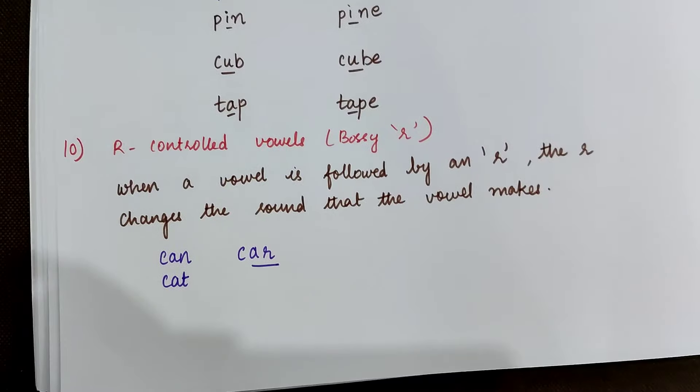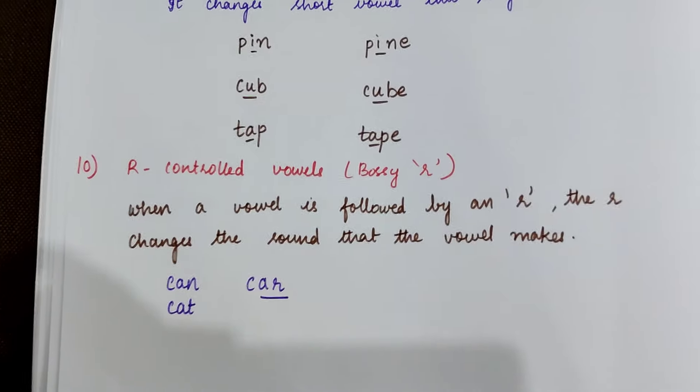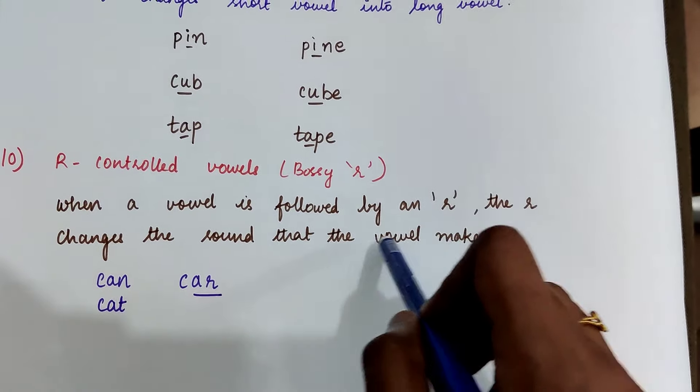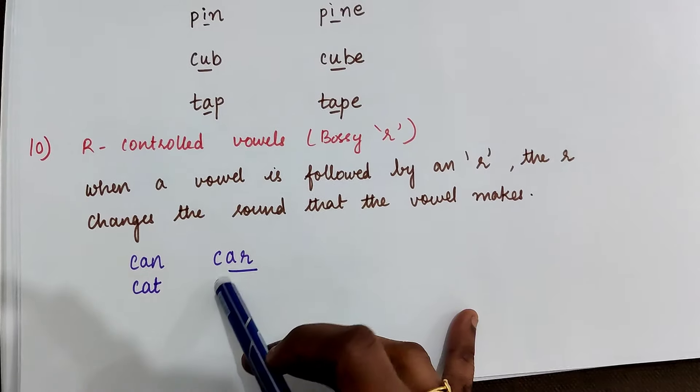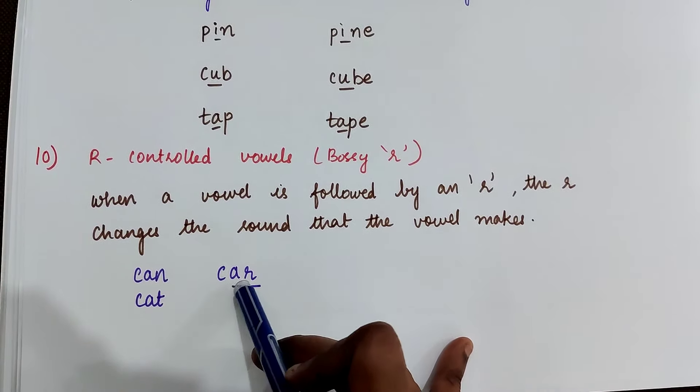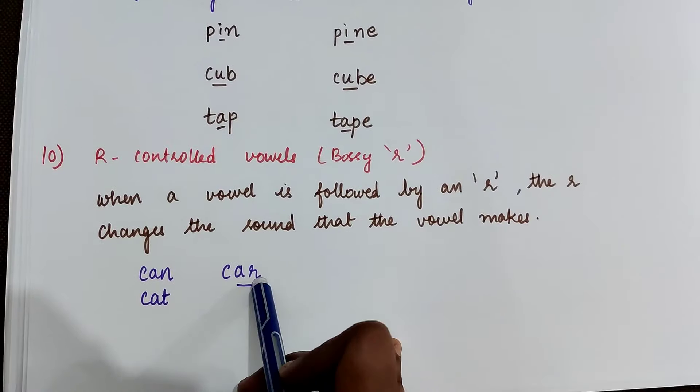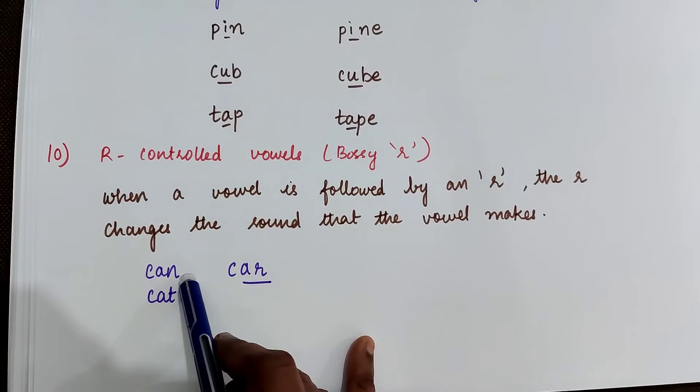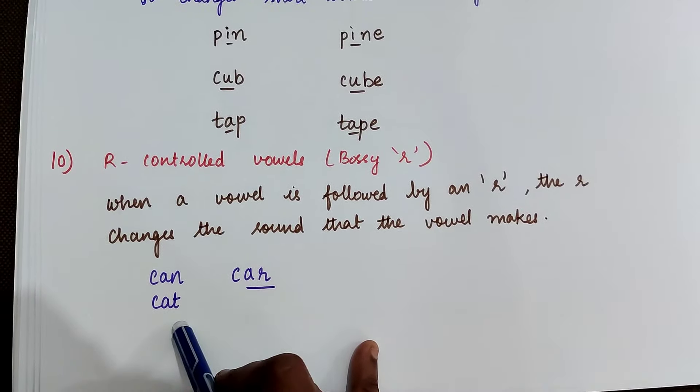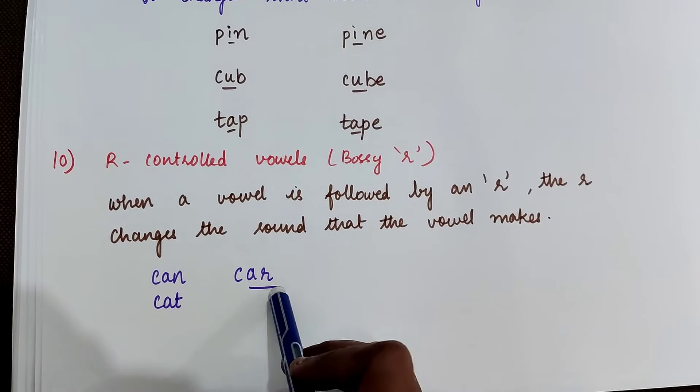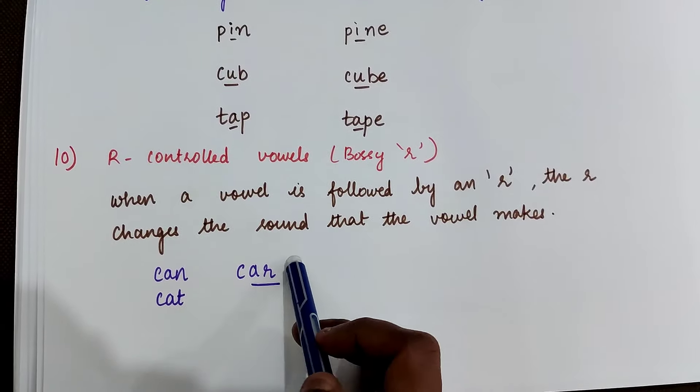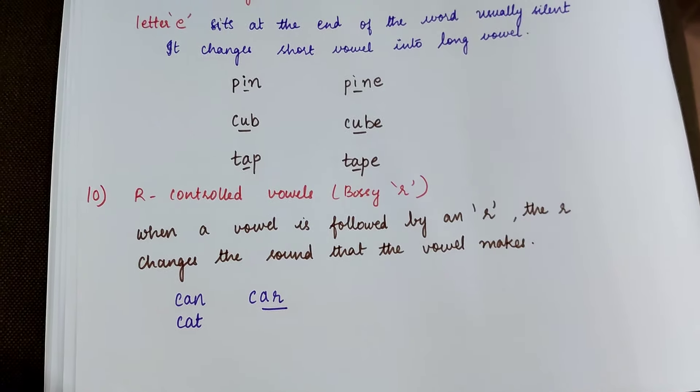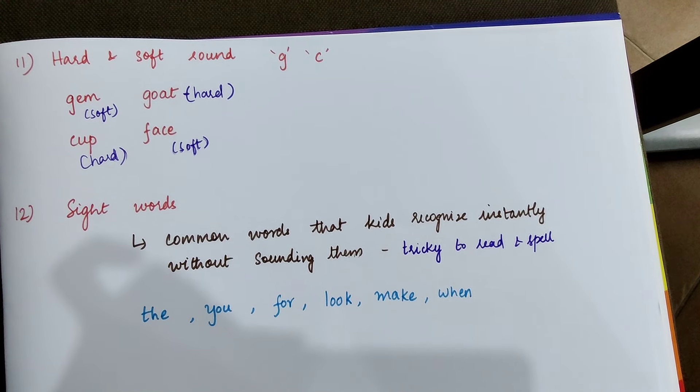And the next topic is R-controlled vowels, or bossy R. When a vowel is followed by an R, the R changes the sound that the vowel makes. For example, in the word car, the R changes the sound the a makes. In car the a sound is different than from the word can and cat. See can, cat, car. In car the a sound is different. That's because of the bossy R.